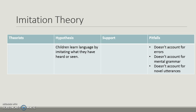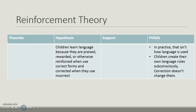Imitation theory is the idea that children learn language by imitating what they've seen or heard. This is not a generally accepted theory, as it doesn't account for errors, mental grammar, or novel utterances. Reinforcement theory argues that children learn language because they're praised, rewarded, or reinforced when they use correct forms, or corrected when they use incorrect ones. This is also not well established in the field because, in practice, that's not how language works — children create their own language rules subconsciously, and correction doesn't appear to change them.